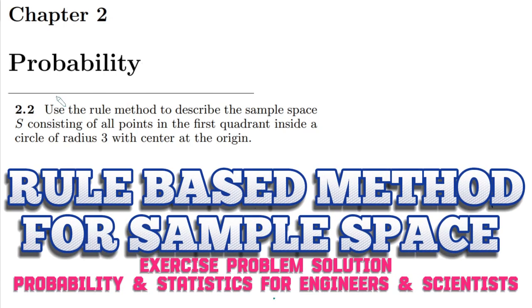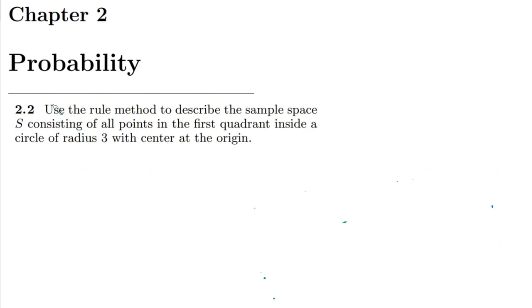Welcome back guys, I hope all of you will be fine. So this is question 2.2 of chapter number 2, which is related to probability. The statement of this question is: use the rule method to describe the sample space S consisting of all points in the first quadrant inside a circle of radius 3 with center at the origin.